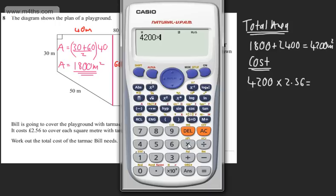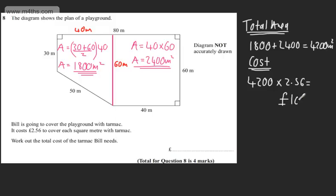4,200 multiplied by 2.56, and that gives us 10,752. So 10,752 pounds. That's the final answer, and the question carries 4 marks.